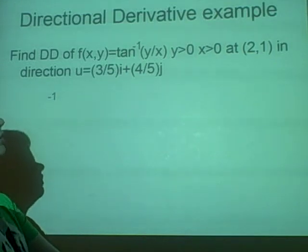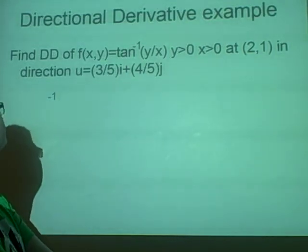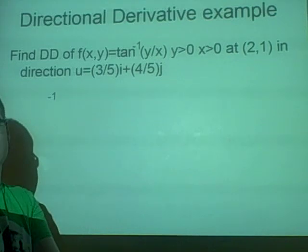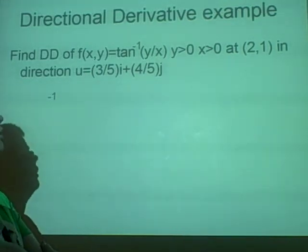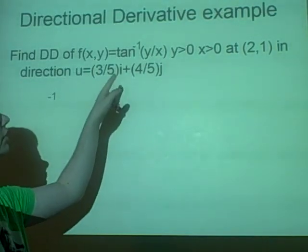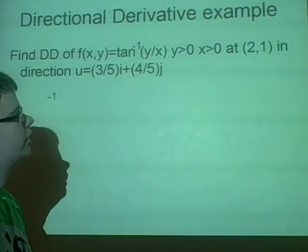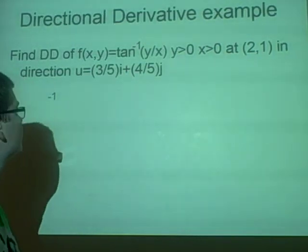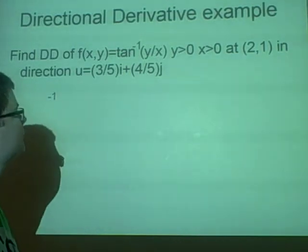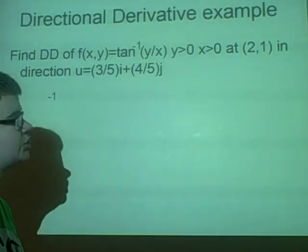Right, a directional derivative example. We want to find the directional derivative of f(x,y), where it equals inverse tan(y/x), x and y are both positive, at the point (2,1) in the direction u=(3/5)i+(4/5)j.